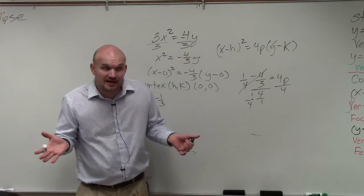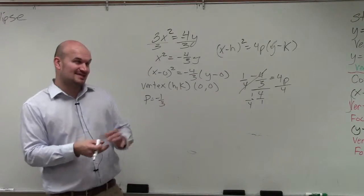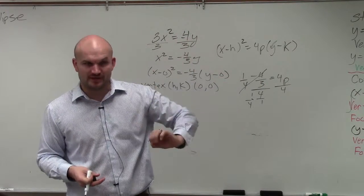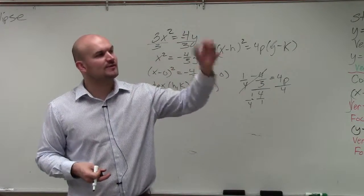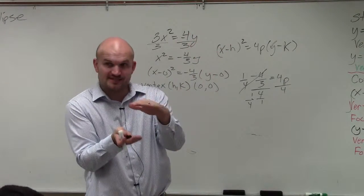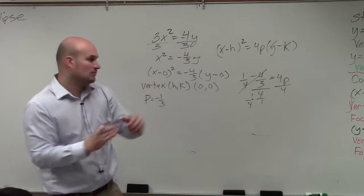Now that I know that p is negative 1 third, remember p tells us our distance from our vertex to our focus. So since we're going from our vertex negative, that means we're going to go in the negative direction. But the distance is still 1 third. So we're going to go down 1 third.